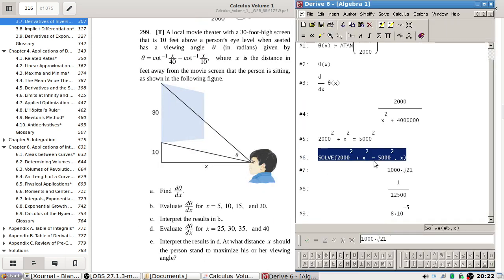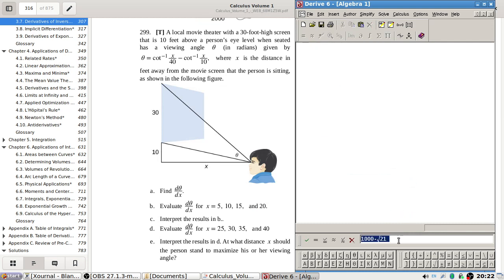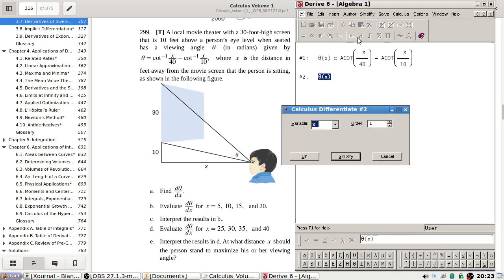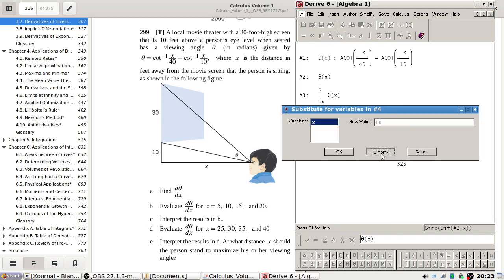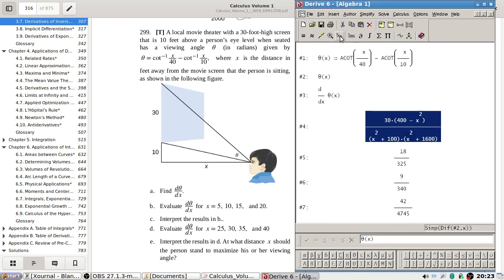And finally, a local movie theater with a 30 foot high screen that is 10 feet above a person's eye level when the seat has a viewing angle as follows. Theta of x is defined as cot inverse x over 40 minus cot inverse x over 10. Did some calculations here. Derivative. And then sub in for 5, 10, 15, 20. Five, ten, fifteen, twenty.